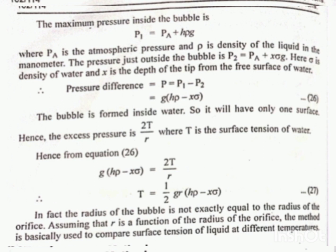So the bubble is formed inside water, so it will have only one surface. Hence, the excess pressure is 2T upon R. Here, T is the surface tension of the water and R is the radius of the tube.